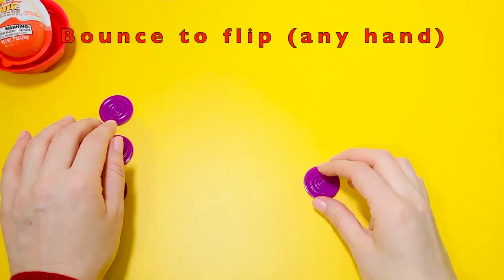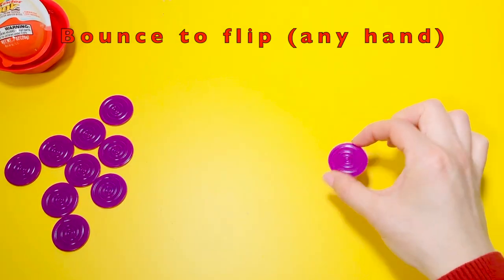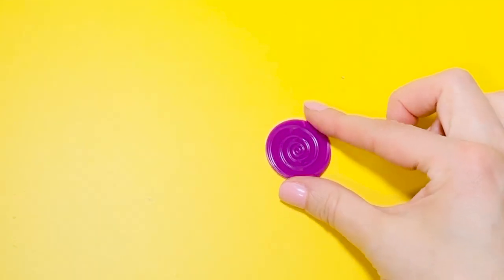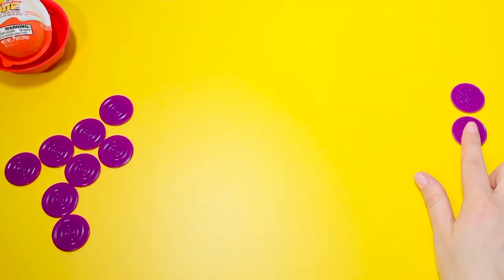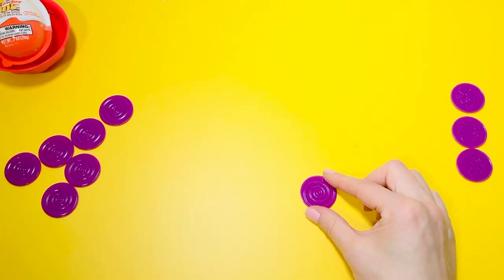Game number four: hold the coin with the thumb and index finger. Bounce it on the table to make it flip to the other side. Use your preferred hand.